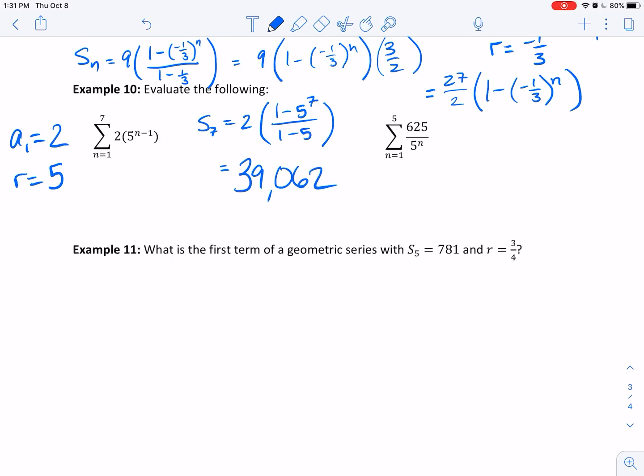This next one, I tried to change it up a little bit. Notice I don't have an n minus 1, so I don't want us to become dependent on expecting it always is n minus 1. The very first term, when I plug in 1, I get 625 divided by 5, which is 125. Our common ratio, let's rewrite this as 625 times one fifth to the n. Now we can see more clearly that the common ratio is one fifth. I noticed we needed to plug in 1 to get the first term, so we need a fifth of that to be the first term.